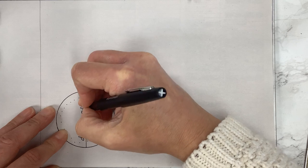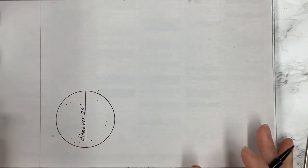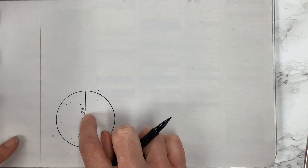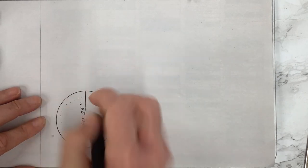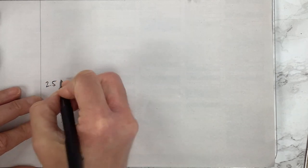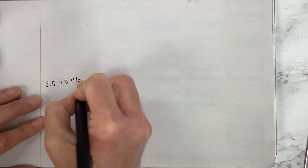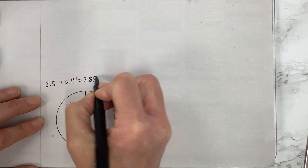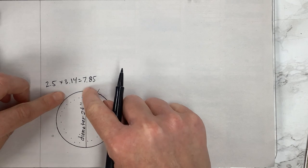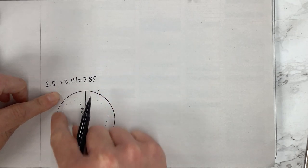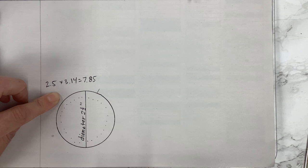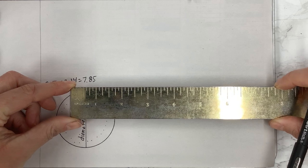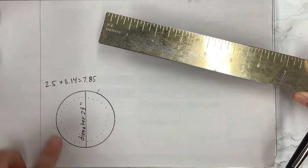So again this line right here that's the diameter. It was two and a half inches. And now to figure out the circumference I would do the diameter times pi so three point one four. So I would do for this particular circle two point five inches times three point one four which equals seven point eight five. So that means that this entire circumference is seven point eight five inches, so with a ruler that would be this distance and it doesn't seem like it's actually that long but it is.